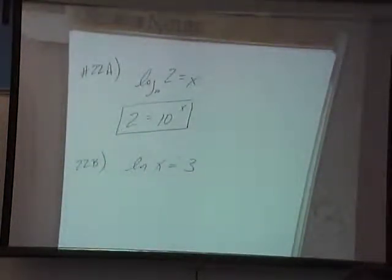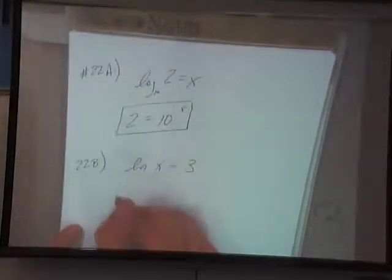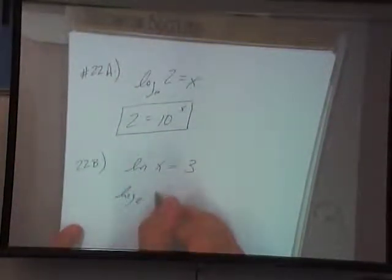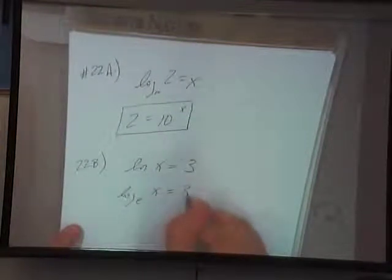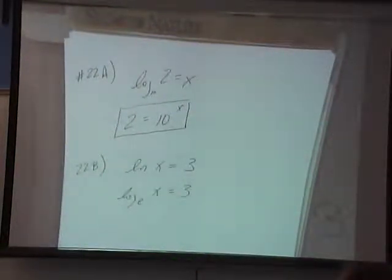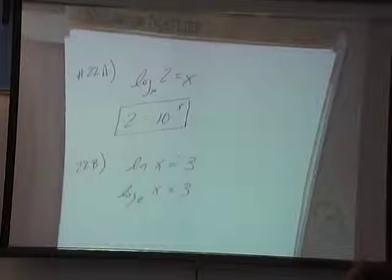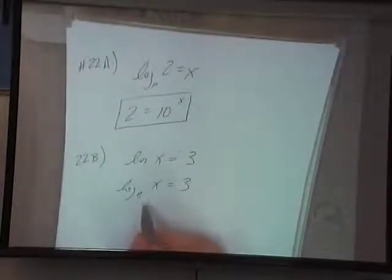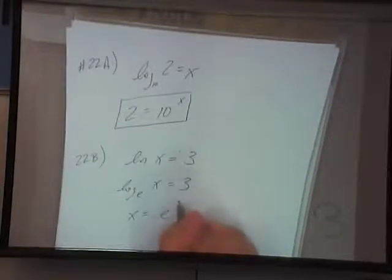Natural log of x equals 3. How do I get rid of the natural log? Log base e. It's the same thing as log base e of x, right? We could do it that way. Same property as 22a. We're going to move the base over and get rid of the log. So x is equal to e to the third power.